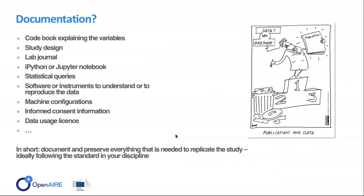In addition to metadata, a good reusable dataset needs documentation. Sometimes the assumption is that all documentation needed about data is already in a publication, but often that's not quite true. For instance, a codebook with variables would not be published in an article, but it is a valuable source to include in the repository. The same holds for your study design, a lab journal, an electronic notebook, statistical queries used, and so on. Ideally, you document and preserve everything needed to replicate the study — a replication package — which is the best thing to deposit for later use by yourself or by others. If there is a standard in your field, please use it.